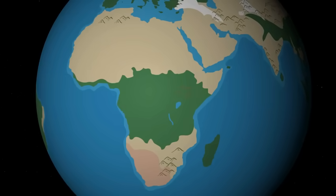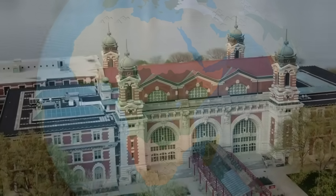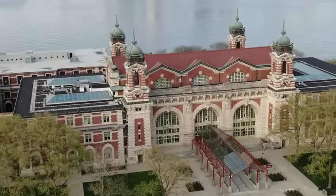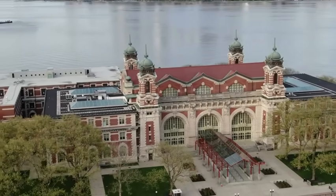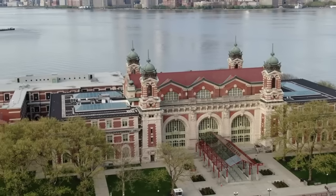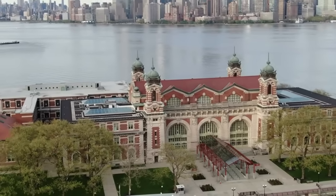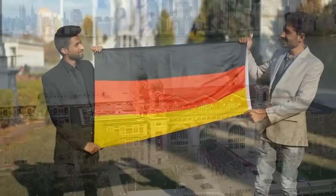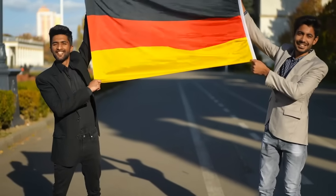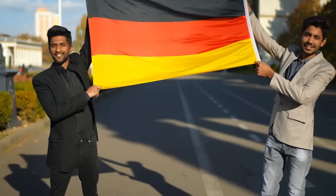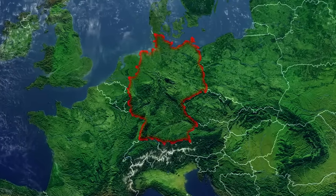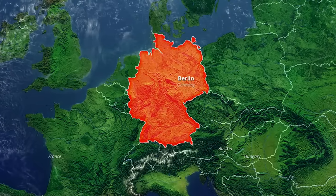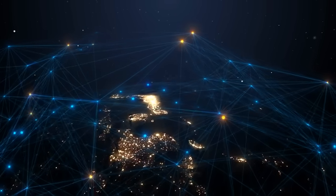As countries become wealthier, they begin to attract immigrants. For example, in the 1800s, a lot of people left Germany for the United States and Canada. But now, in the 2000s, Germany has become one of the leading destinations in Europe, drawing immigrants from Turkey, Syria, and across the European Union for work and safety.